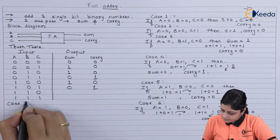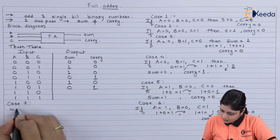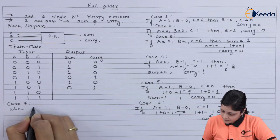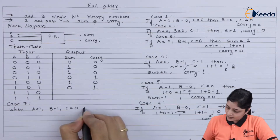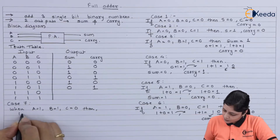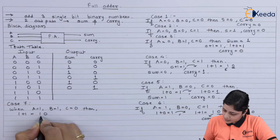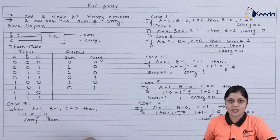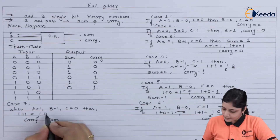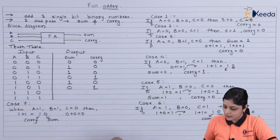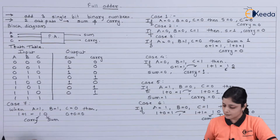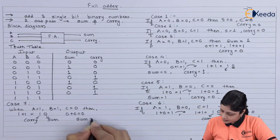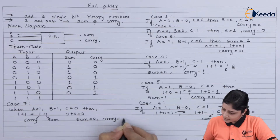Case 7: when A equals 1, B equals 1, and C equals 0, then 1 plus 1 gives 10, so carry equals 1 and sum equals 0. Then 0 plus 0 gives 0, meaning sum is 0 and carry is 1. Finally sum is 0 and carry is 1.